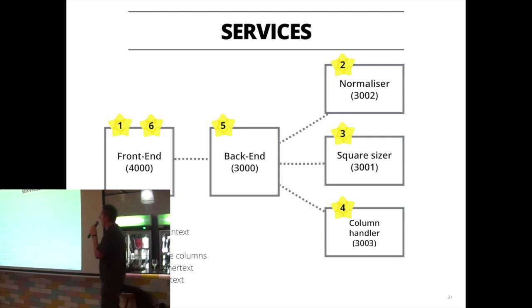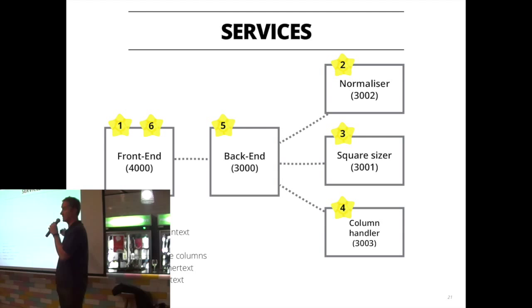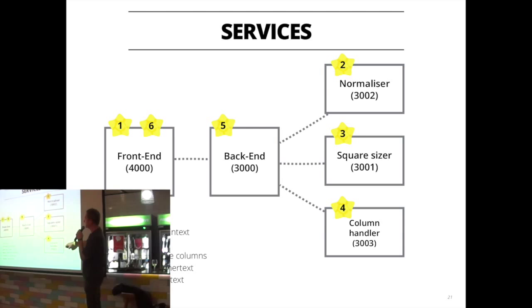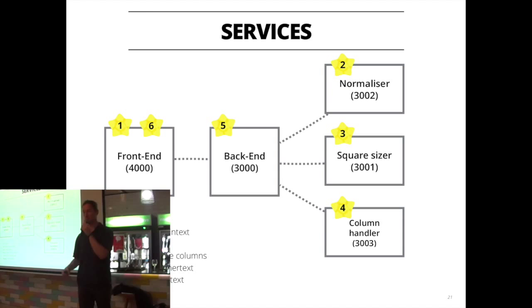So let's go to the code. I'll confess I was away the day they taught bounded context in domain-driven design, so please do not use this as a demonstration of how and where to split a solution into microservices. What I've basically done is created more or less one service for each of those steps: a front-end service for input and output, an orchestrating back-end service, then three services for normalization, working out the square size, and building the columns into the ciphertext. Incredibly poor way of decomposing into services, but that was not the point.